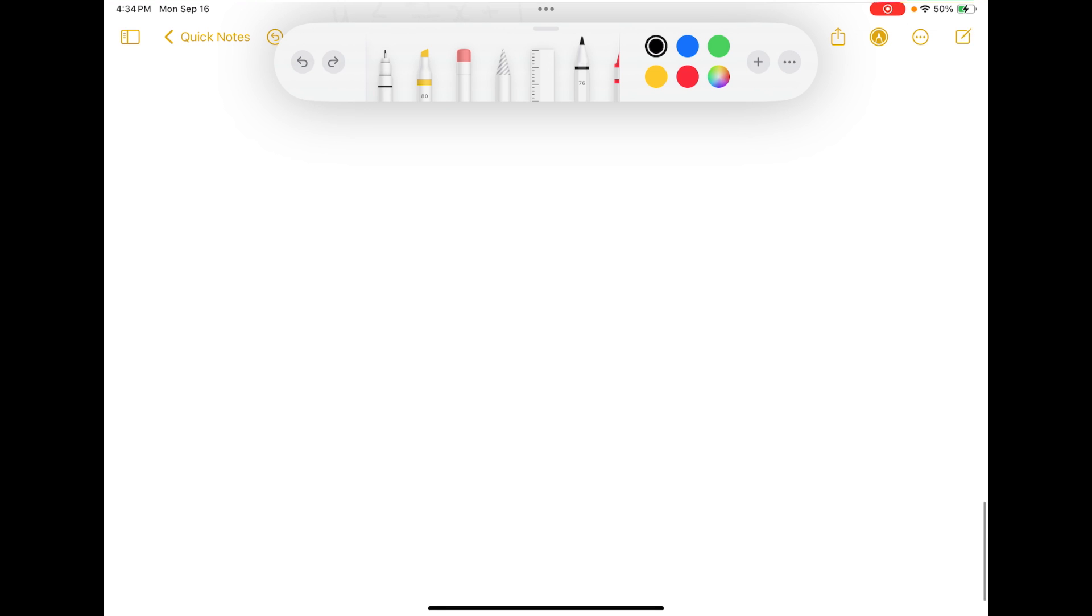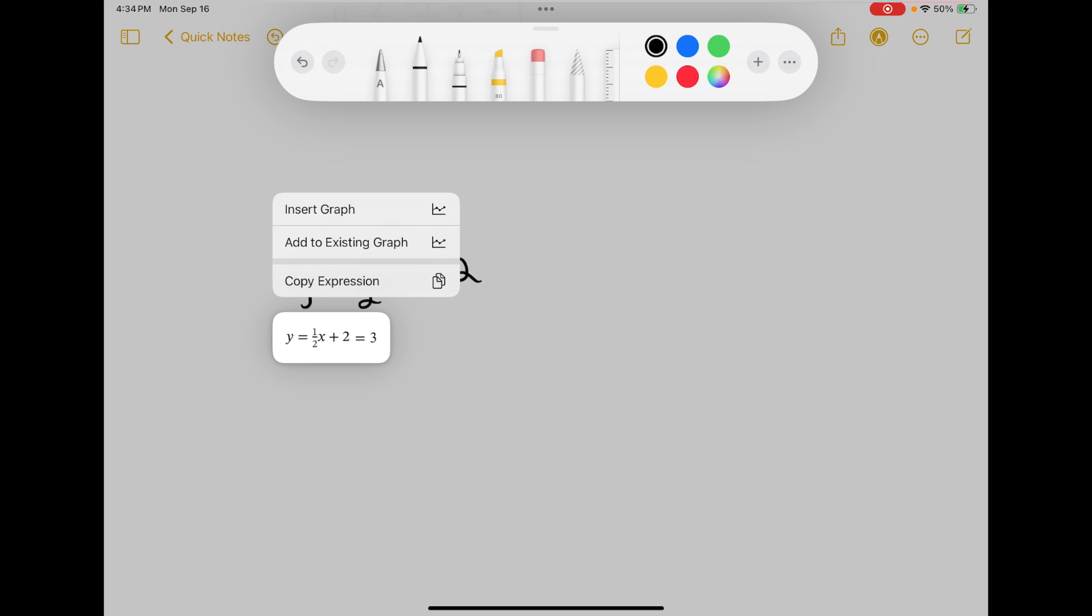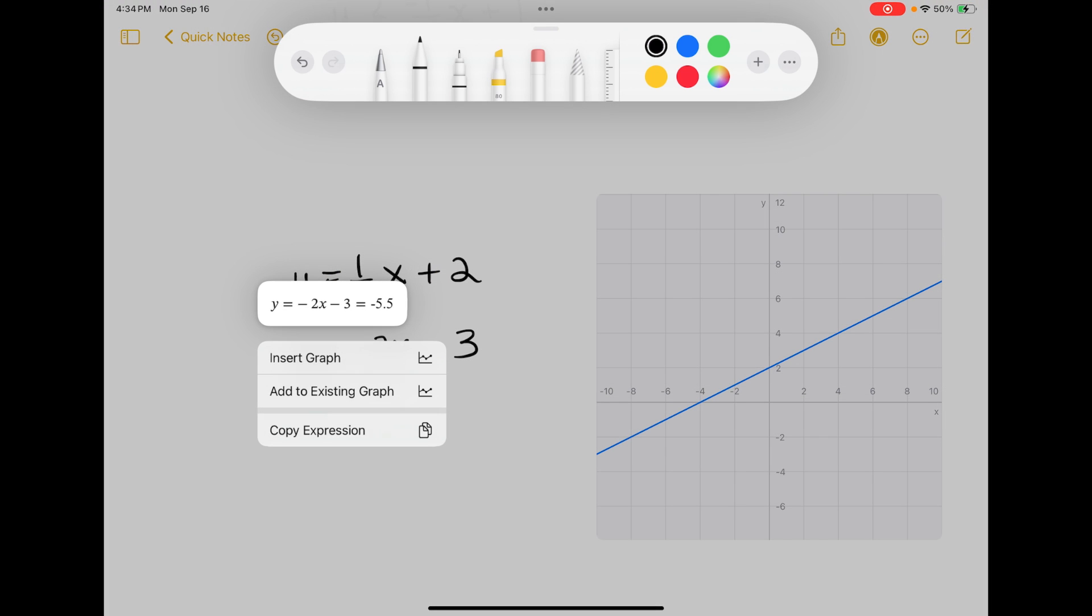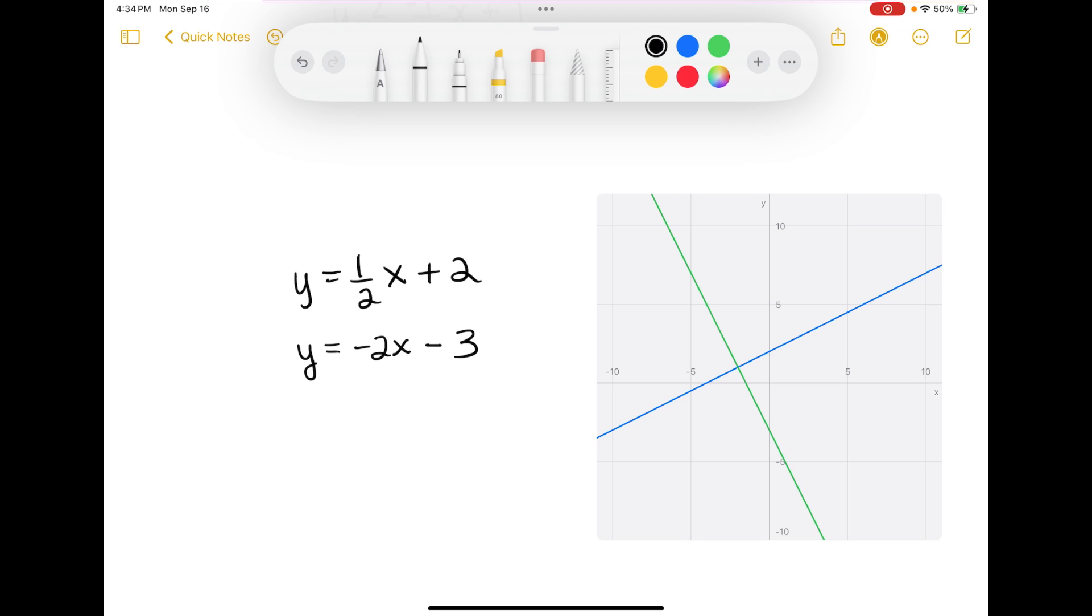You can graph two things on the same graph. I'm going to switch to a pen and see if that helps. So if I did y equals one half x plus 2 and then tap on that and insert a graph, it's going to graph that line. And then I could graph its perpendicular and say y equals negative 2x minus 3 and I can insert the graph or I can add to an existing graph. So I'm going to choose the second one here, add to existing graph, and it's going to plot that on the exact same graph that I have.